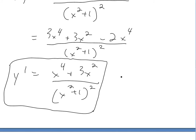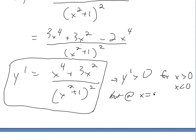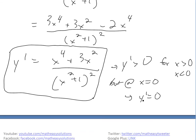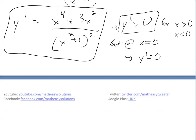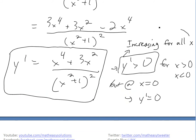Looking at this derivative, all powers are even, so the numerator x⁴ + 3x² is always non-negative, and the denominator (x² + 1)² is always positive. Therefore f′(x) ≥ 0 for all x. It equals zero only at x = 0, which is a critical number, but f′ is greater than zero everywhere else, so the function is increasing for all x except at x = 0.